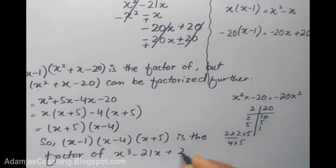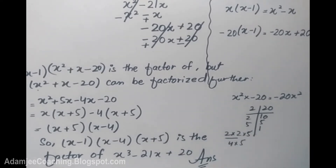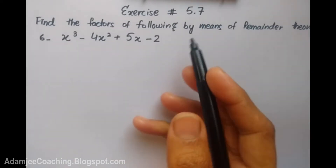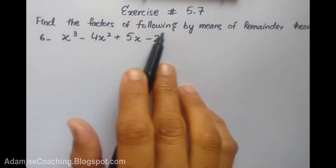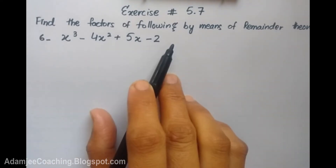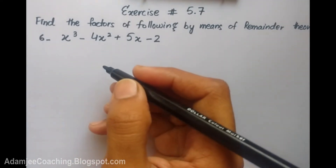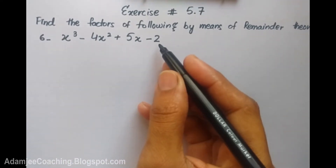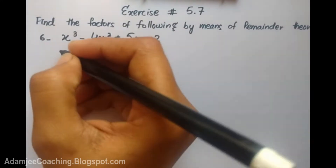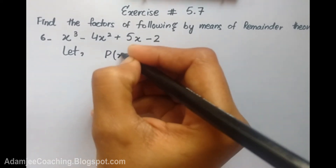So x cubed minus 21x plus 20 — this is the answer. These questions are very important; this type comes every year, so practice is very important. If you have 10 questions in the exercise, it is very easy to answer as one method is used for everything. Exercise 5.7, question number 6: we have to find the factors of the following by means of the Remainder Theorem. First of all, we will put our given expression in the value of x; if the given expression equals 0, it means it is a factor.